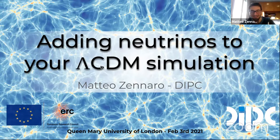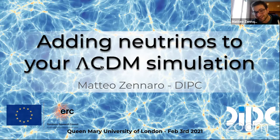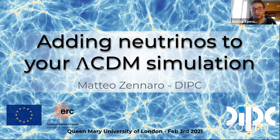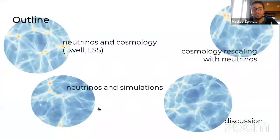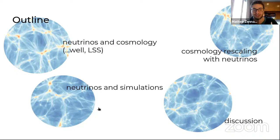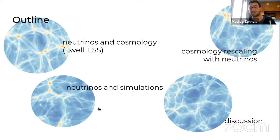Thank you very much for offering me the opportunity to speak today. Please feel free to ask questions — just unmute yourselves, because if you write in the chat I might not notice it. So I'm going to speak mostly about this paper that came out almost one year ago. It is a paper about a lambda CDM simulation that you run without neutrinos, and you want to add a neutrino component to it.